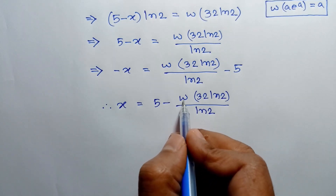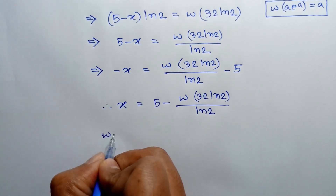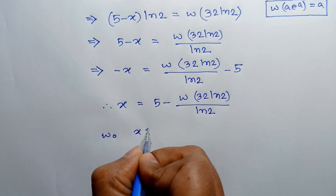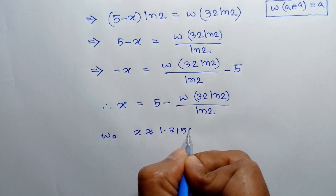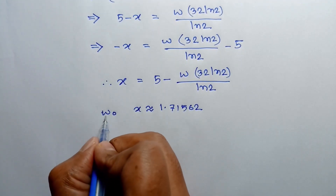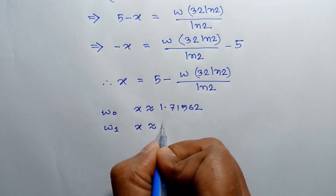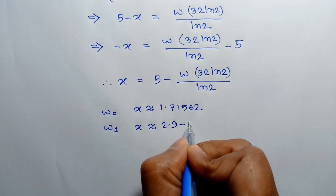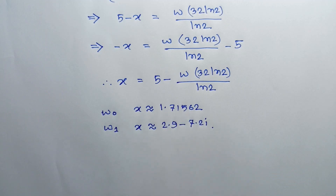The Lambert W function is a multi-valued function. For the principal branch W₀, the real solution gives x approximately equal to 1.71562. For other branches such as W₁, the solutions are complex — for example, x is approximately 2.9 minus 7.2i. So the only real solution of this equation is x ≈ 1.71562. If you like this video, please subscribe to my channel. Thanks for watching.